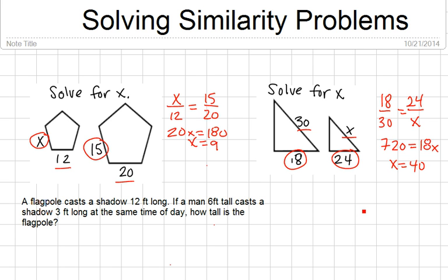Now I'm going to have a word problem here. And we're going to look at that. A flagpole casts a shadow of 12 feet long. So I'm going to draw a pole with a flag. And it casts a shadow of 12 feet long. So I'm going to make a triangle here. So if a man, 6 feet tall, casts a shadow 3 feet long, at the same time of day, how tall is the flagpole? So we're going to find that x. So this makes similar triangles.